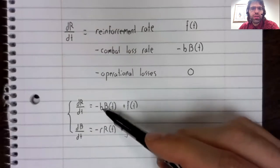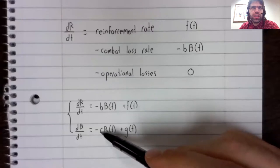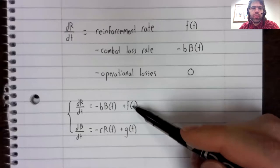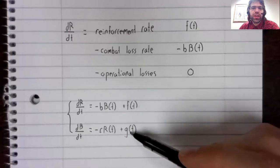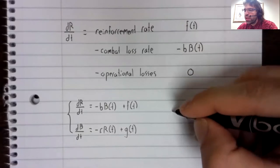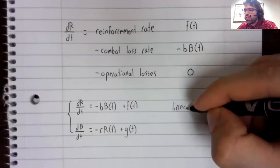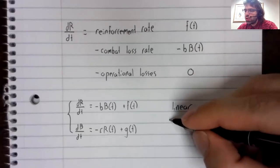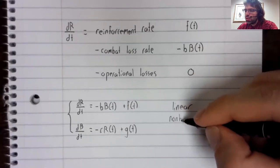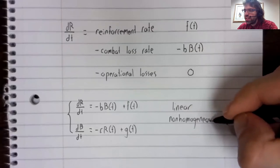The strength of Blue Army, their equipment and training. The strength of Red Army, their equipment and training. A reinforcement rate and a reinforcement rate. And the system is linear, but it's non-homogeneous.